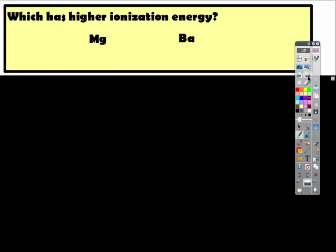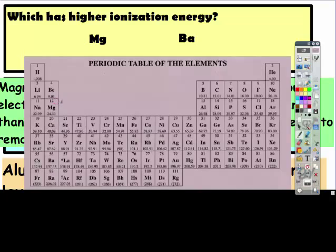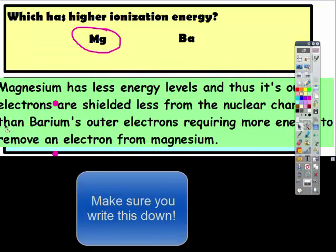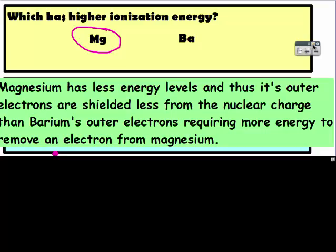Figure out which has the higher ionization energy: magnesium or barium. Magnesium has a higher ionization energy. The reason why is that magnesium has fewer energy levels, and thus its outer electrons are shielded less from the nuclear charge than barium's outer electrons, requiring more energy to remove an electron from magnesium. Make sure you write all of that explanation down.